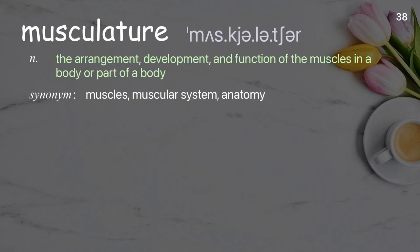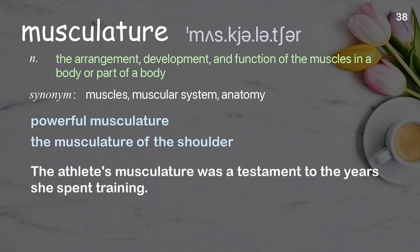Musculature: the arrangement, development, and function of the muscles in a body or part of a body. Examples: powerful musculature, the musculature of the shoulder. The athlete's musculature was a testament to the years she spent training.